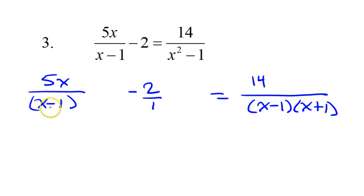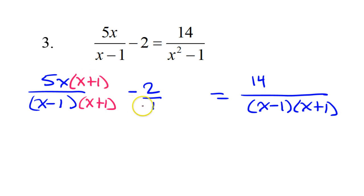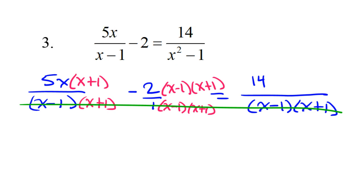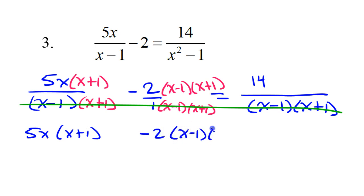Now I need all of the denominators to be the same. I see x minus 1, x minus 1 — that's good so far. But this has x plus 1, so I'm going to put an x plus 1 in the denominator and numerator. Now these two denominators are both the same. But this has to also be x minus 1, x plus 1, so I'm going to put x minus 1, x plus 1 in the numerator and the denominator. Now all of my denominators are x minus 1, x plus 1. Once you have all of the denominators the same, you can ignore the denominators and just set all the numerators equal to each other. So I have 5x times x plus 1 minus 2 times x minus 1 times x plus 1 is equal to 14.